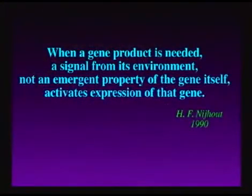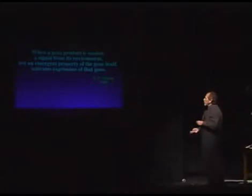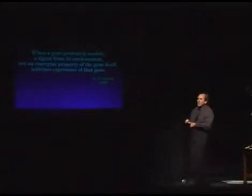Do genes really control? This paper reveals the truth in a sentence by Niehout: 'When a gene product is needed, a signal from its environment — not an emergent property of the gene itself — activates expression of that gene.' Not an emergent property of the gene itself means genes are blueprints. A blueprint is just data — it doesn't go on or off. What goes on and off is who's reading the blueprint. Genes don't determine if they'll be read or not. What makes them read is a signal from the environment.